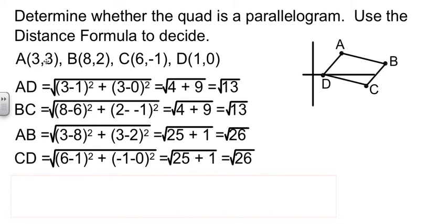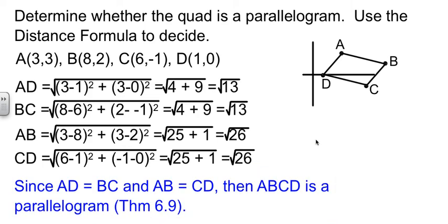AB. 3 minus 8 squared. And 3 minus 2 squared. Square root of 26. And again, I don't care that that's 5 point whatever. I just need to be able to compare it to the next one. And as you can tell, CD also comes out to the square root of 26. So since both sets of opposite sides are congruent, that tells me I have a parallelogram. And I even cited the theorem just to back myself up a little bit, justify my answer.